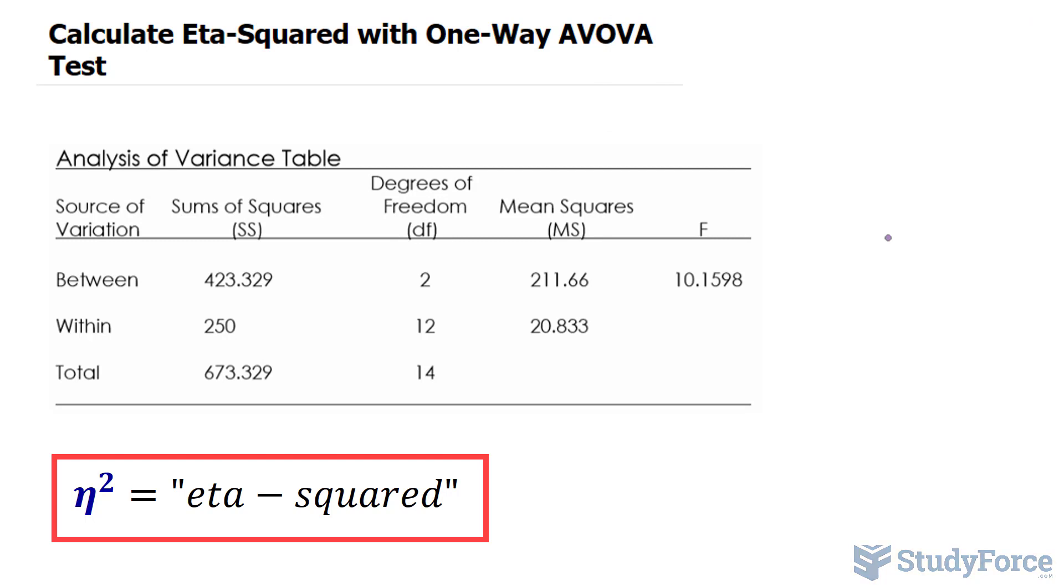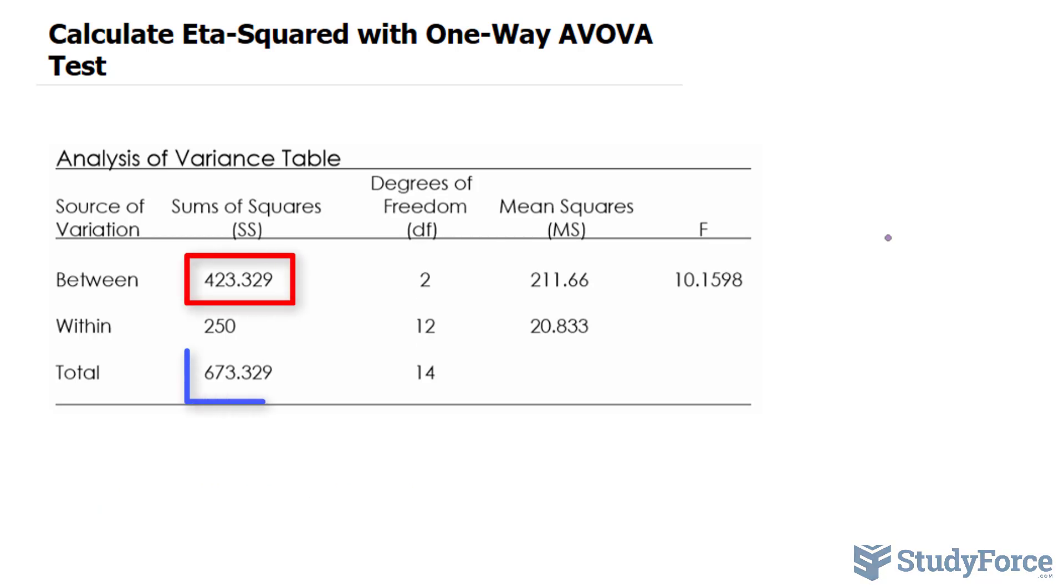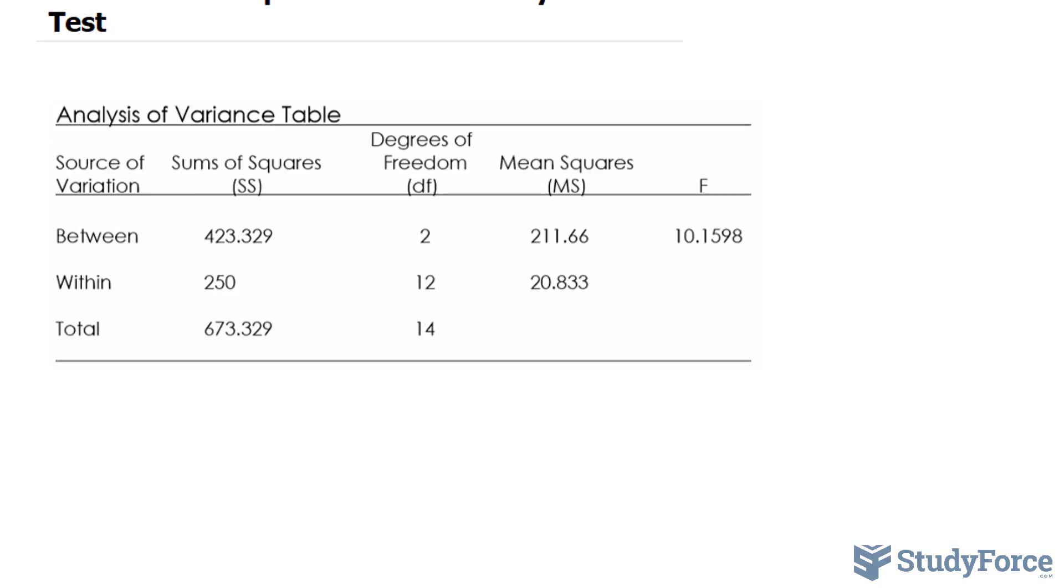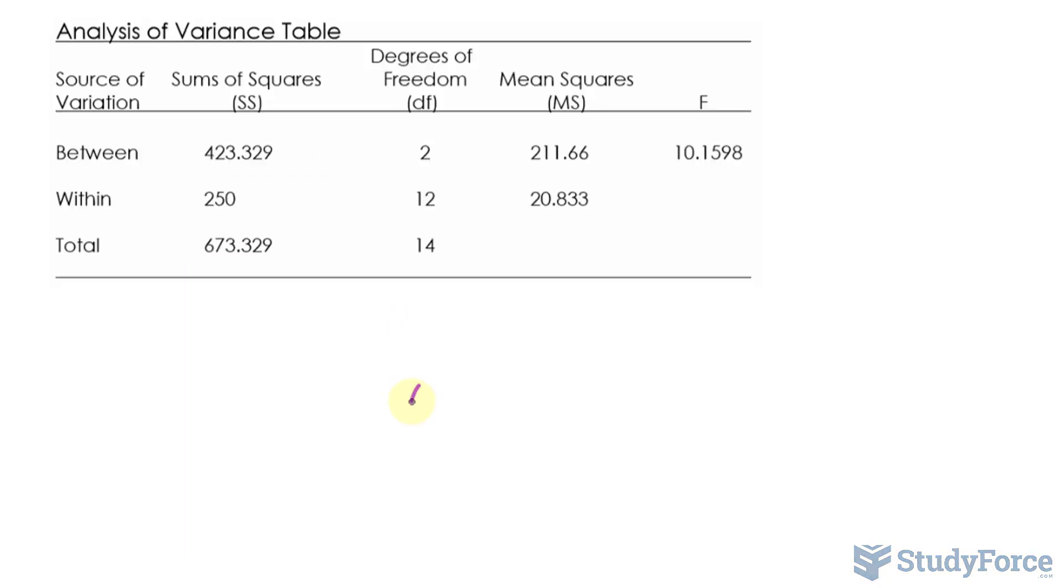So we use the following statistic to find the ratio of variation due to the treatments, which is this part of the ANOVA table, to the total variation. Here's what I mean. The ratio is a comparison, and this is the Greek letter.